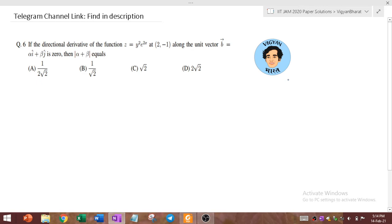So what we are given, we are given a function z, basically it is a function of two variables, here you can see z is given by this. And we have to find the directional derivative of this function z at this point along the unit vector b.